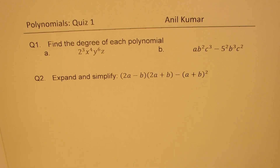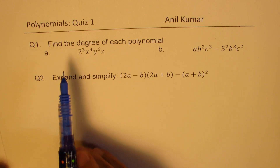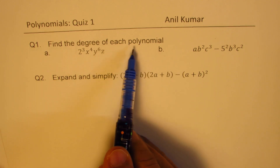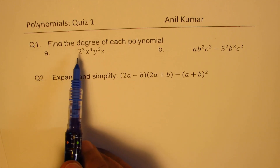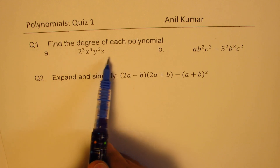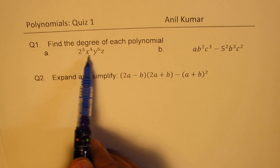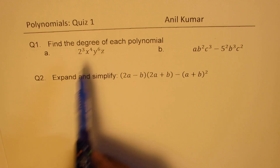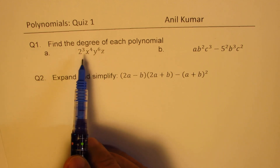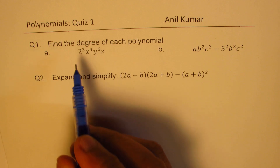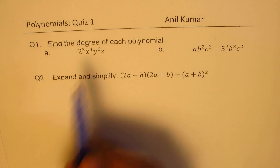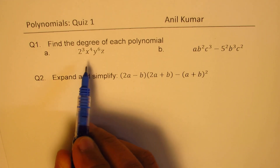Question number one: find the degree of each polynomial. Now this is a monomial — only one term is given to us. The degree will be found from the exponents.